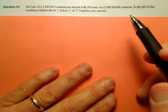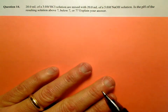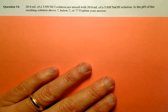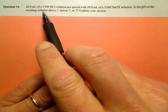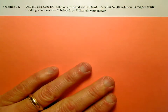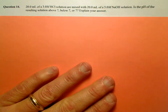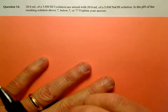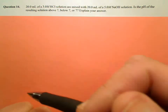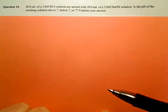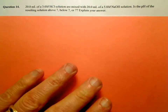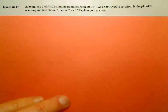Here's another problem we can solve without touching our calculator. We have 20 milliliters of 3.0 molar HCl, and we mix that with 20 milliliters — same volume — of 5 molar sodium hydroxide. We want to find out: when you mix the two together, is the resulting solution acidic, basic, or neutral? Above 7, below 7, or 7?